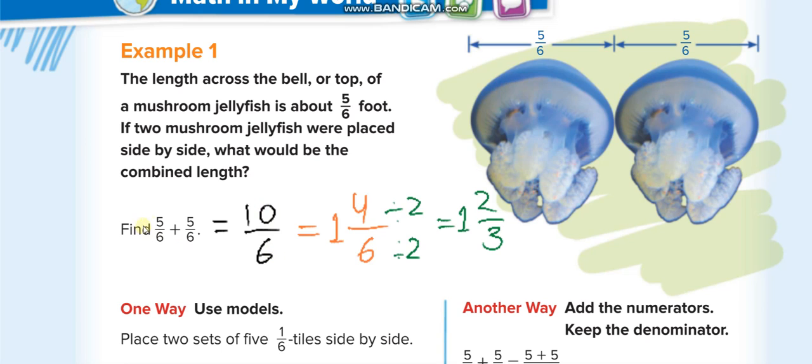We just add the numerators; we don't add the denominators. Now we get an improper fraction. Improper fraction means when the numerator is greater than the denominator, we call it an improper fraction.